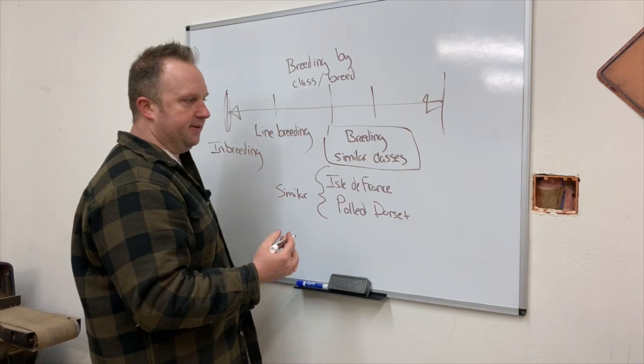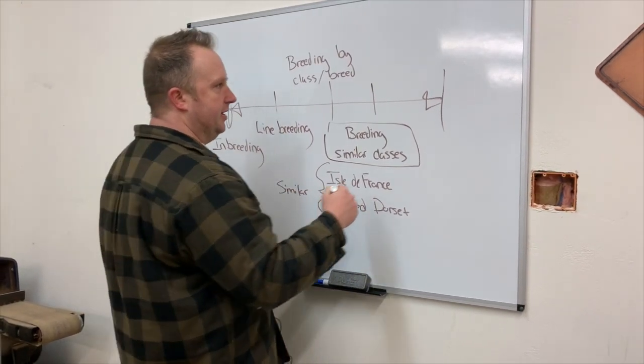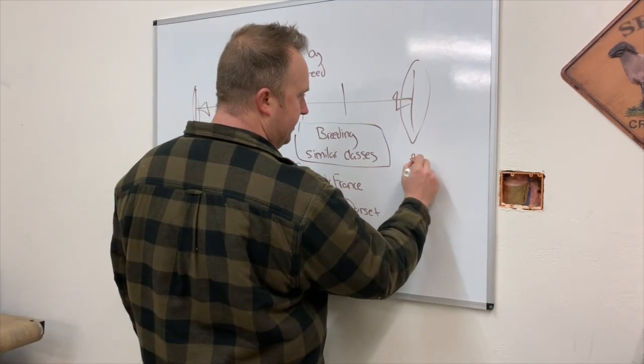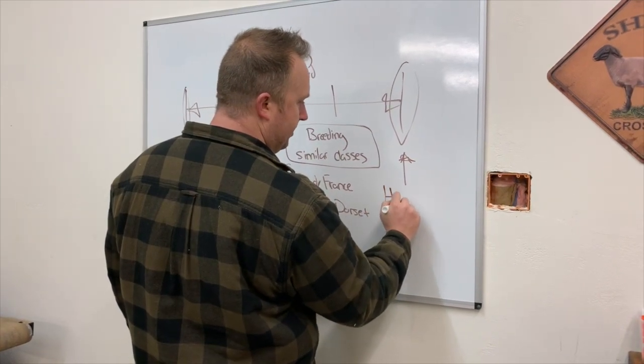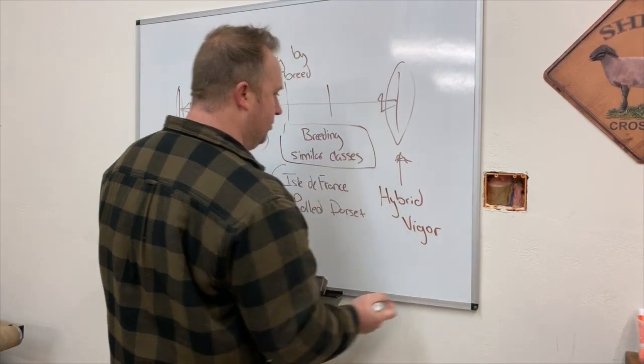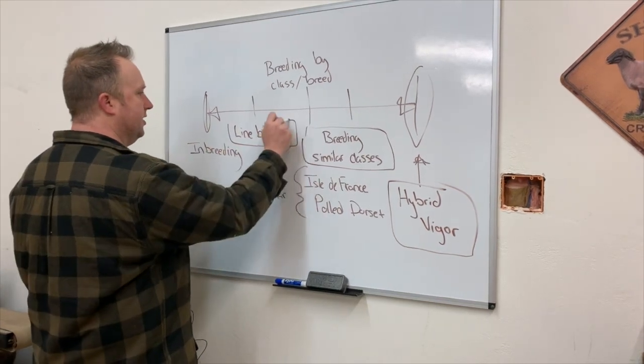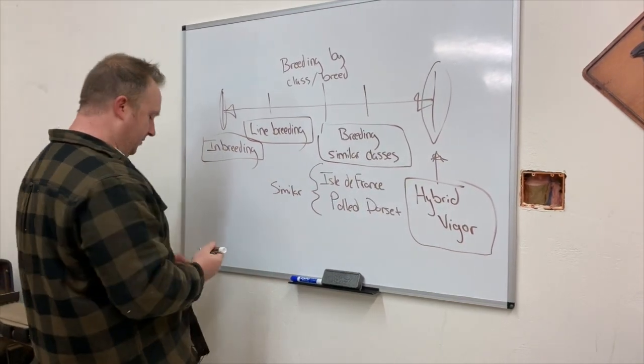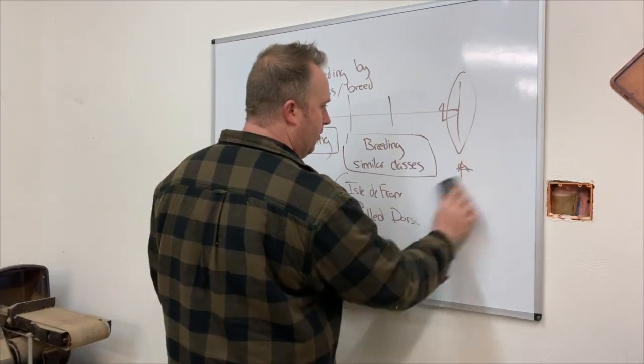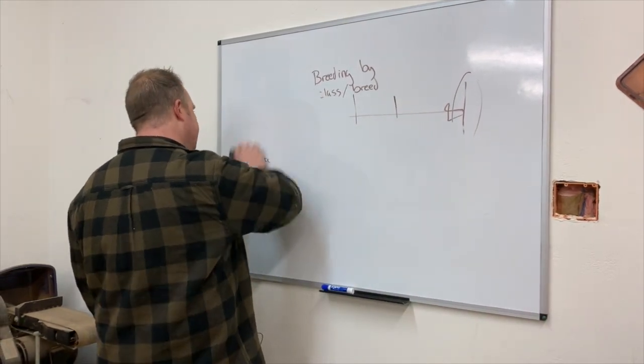They have different genetic profiles but very similar attributes. And then way down here, this is where we really get into what we call hybrid vigor. We're going to talk today about inbreeding, line breeding, and hybrid vigor - what they are, what they mean, why they're important to understand, especially on your small farm.